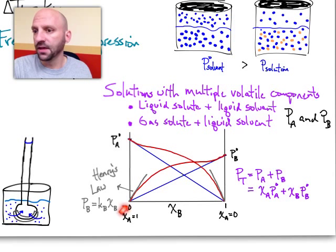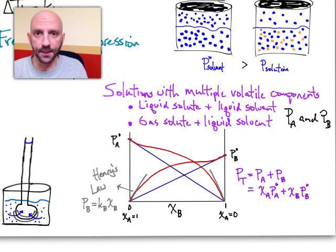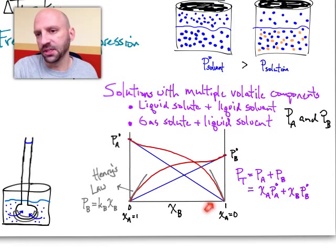On the other end if my mole fraction of B is 0, so the only thing I have is A, then my system's vapor pressure is described as being P sub A superscript 0, so the pure vapor pressure of component A.